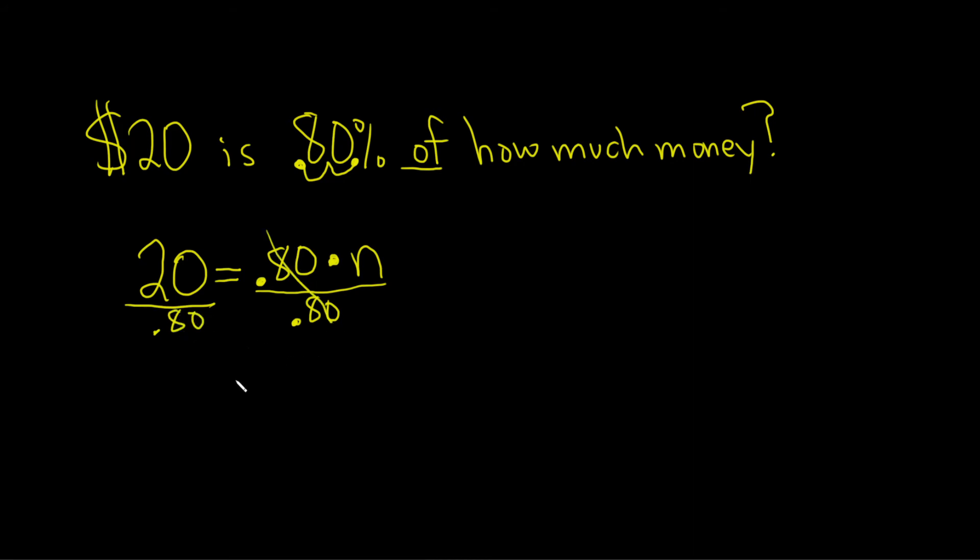So we have twenty over point eight oh. So if you put this in your calculator you get, I got twenty five. So twenty five is equal to n.